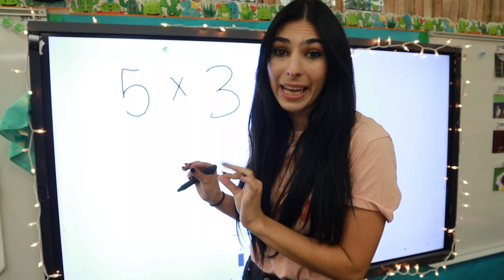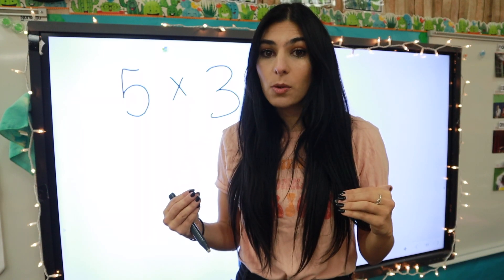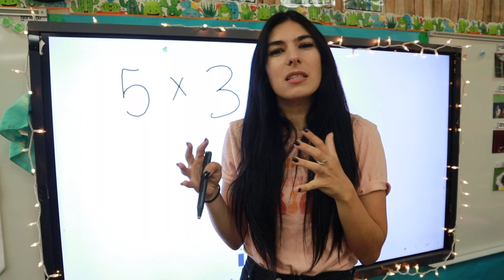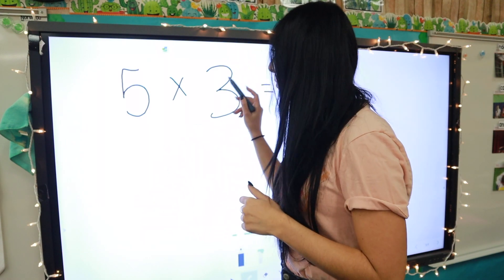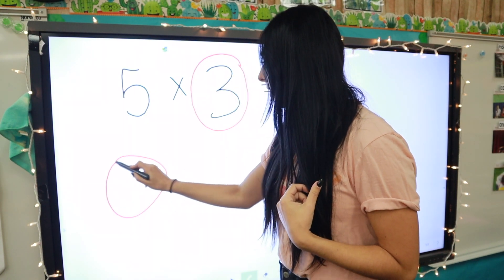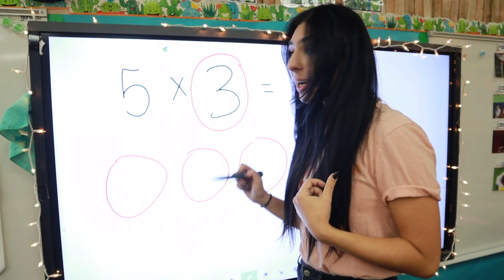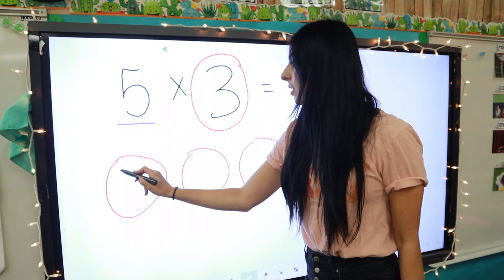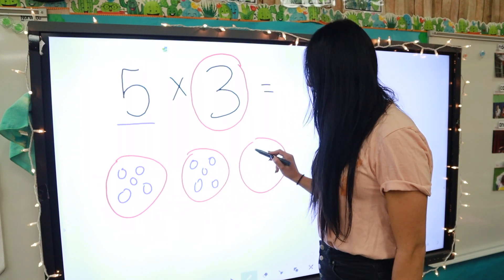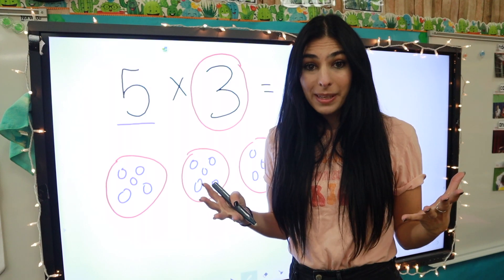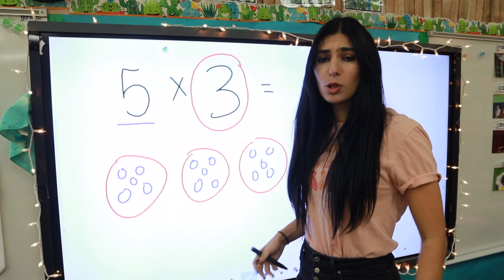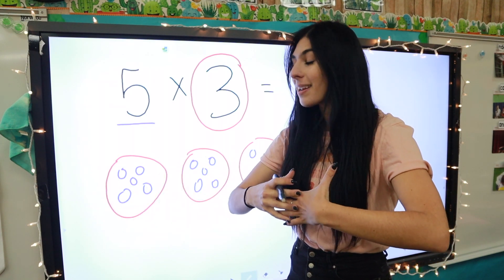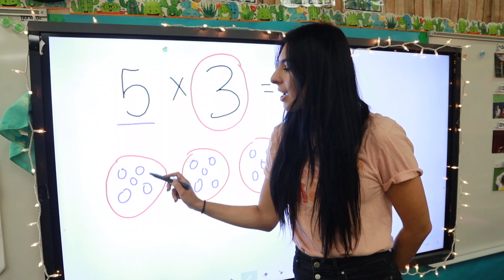Here's our first multiplication equation. We're going to do equal groups, which means big circles and little circles. I want to do the least amount of groups as possible, so I'm going to do three groups - one, two, three - and then inside of these groups I'm going to put five little circles: one, two, three, four, five in each group.